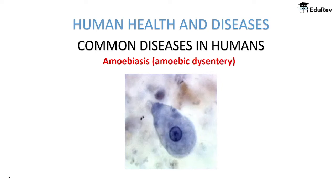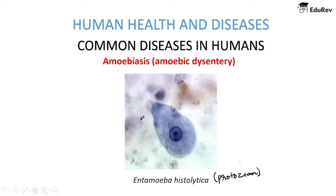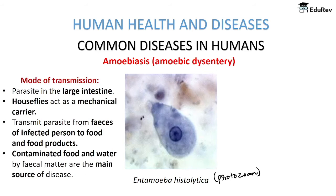The next type of common disease is amoebiasis, also known as amoebic dysentery, which is caused by Entamoeba histolytica, which is a protozoa. This small protozoa causes the disease known as amoebiasis or amoebic dysentery. Coming to its mode of transmission, it is a parasite found in the large intestine, and transmission occurs through house flies that act as mechanical carriers.